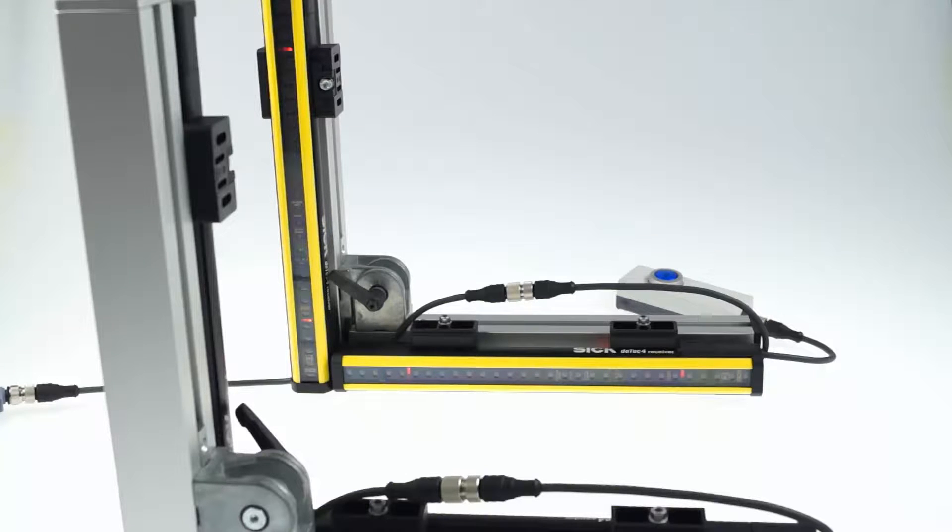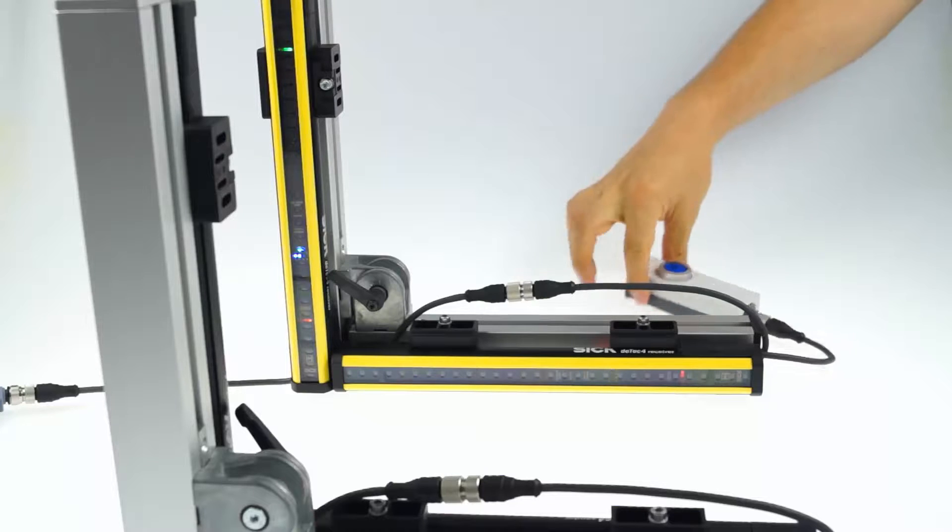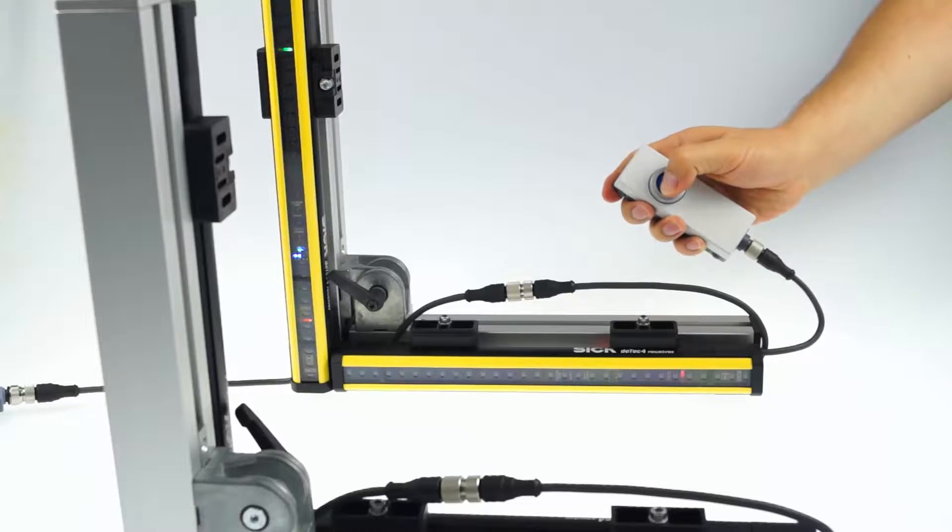If we now connect the system to the power supply, it automatically switches into the configuration mode, indicated by the green flashing LEDs. The cascade and EDM are directly configured and we can now press the reset button to include it in our configuration.